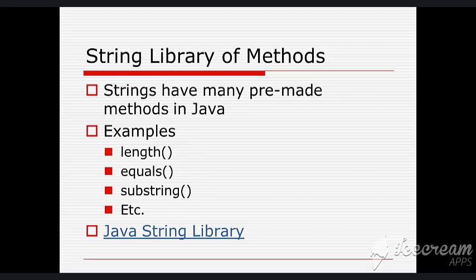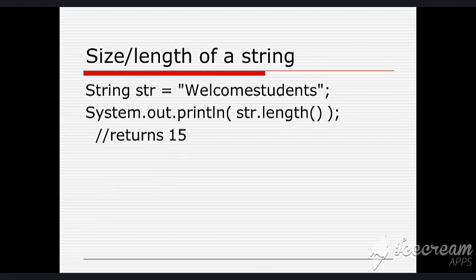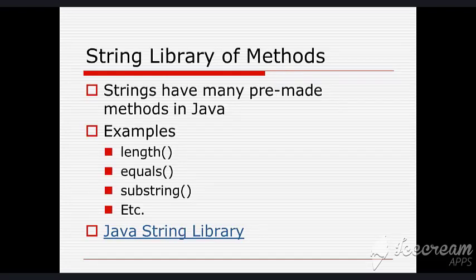String libraries of methods. Strings have many pre-made methods in Java. We have a lot of methods in Java to calculate or to play with the strings. The first of this is length, equals, substring. If you want to calculate the length of the string, in this example as we discussed earlier, we want to calculate the length of str string which is 15. Similarly, if you want to equal two strings, you can use the equals method.